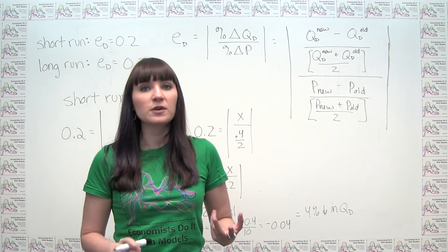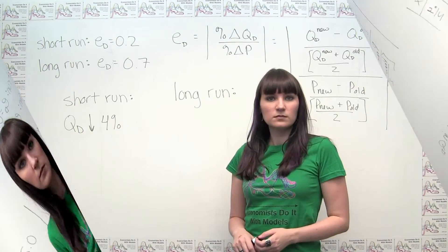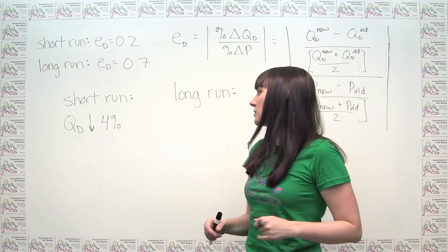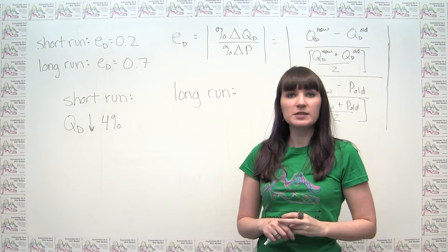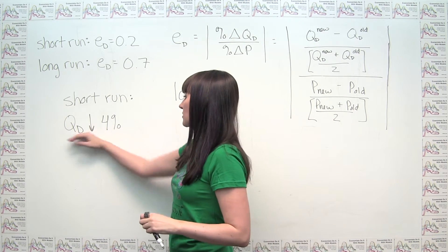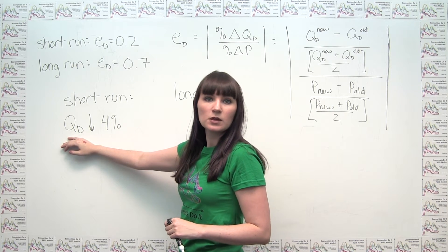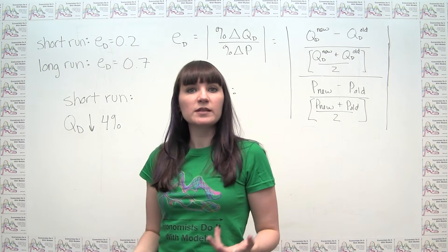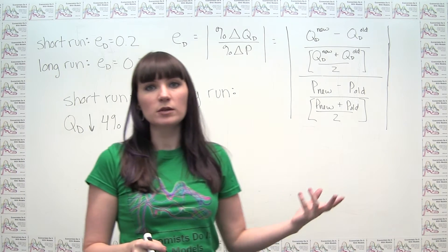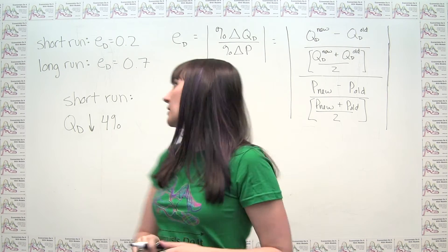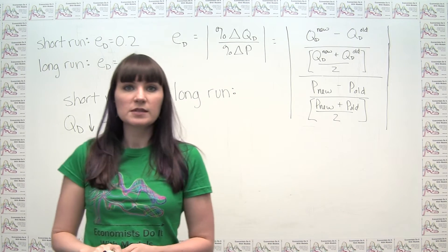That's probably the most specific we can be with the information given. To summarize: in the short run, in response to the price change from $1.80 to $2.20, we're going to see a 4% decline in the quantity demanded of heating oil. Now we want to repeat this exercise for what happens to quantity demanded in the long run, where the elasticity of demand is 0.7.